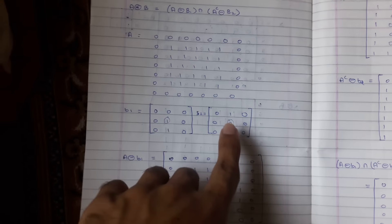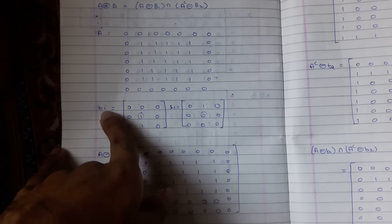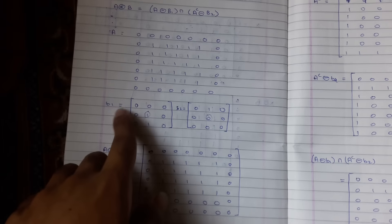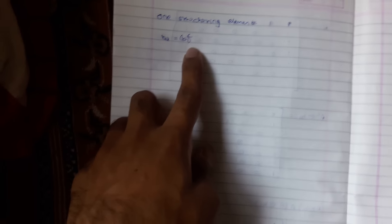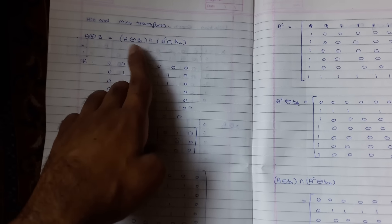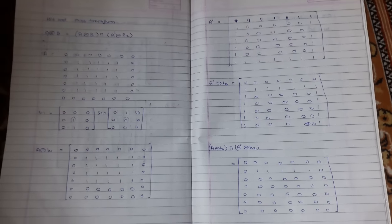In the hit and miss transform, two structuring elements are used. If only one structuring element B1 is provided, then B2 is simply the complement of B1. You follow the same procedure and formula, just substituting B1 complement in place of B2, and you will get the answer.